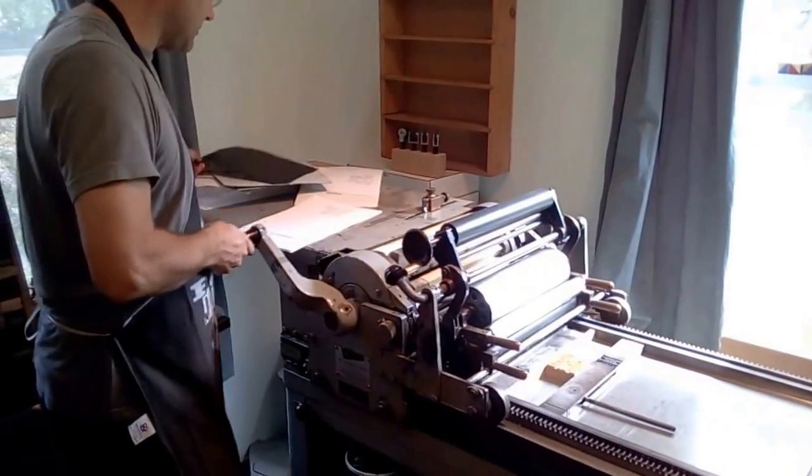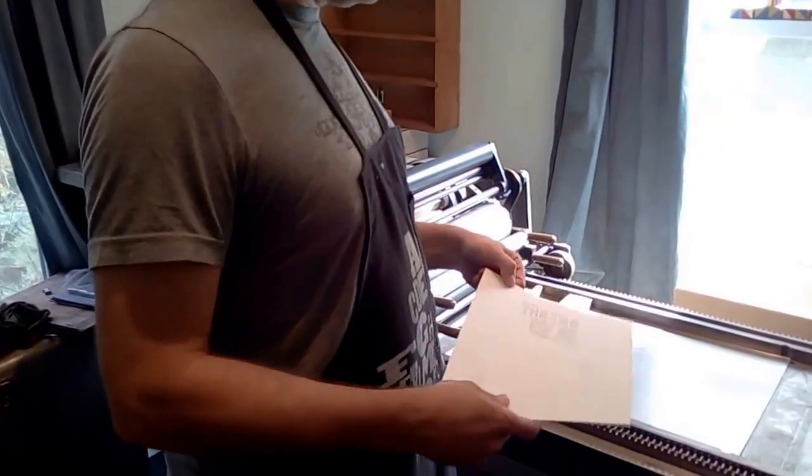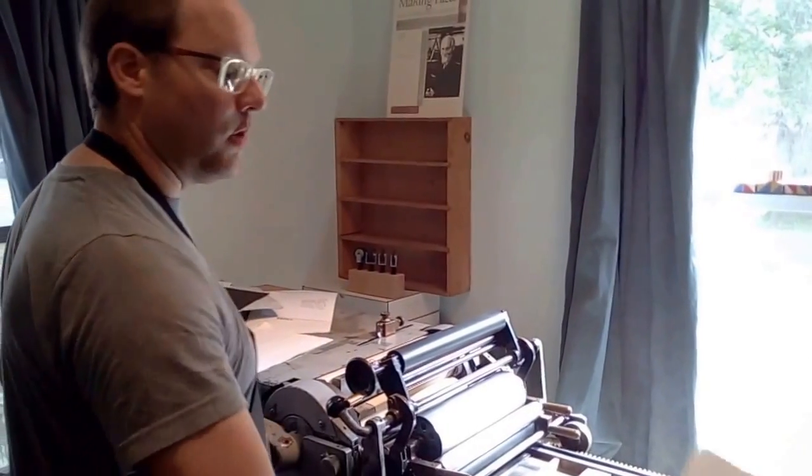So then take all the type, put it back in the tray, put the proof on it, and it goes out for Jerry to approve. She's quality control. What we're checking for is to make sure the wood is type high as well as the hand trimming.